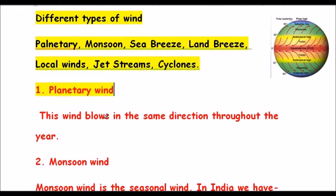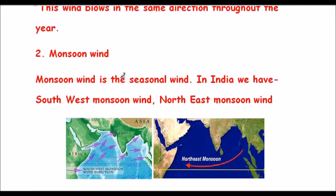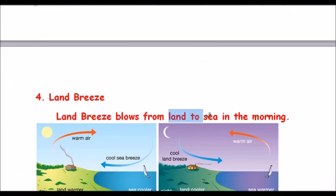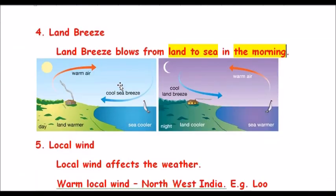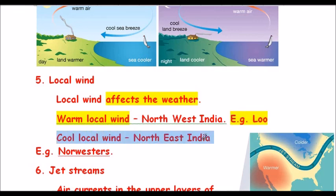Planetary winds blow in the same direction throughout the year. Monsoon wind is a seasonal wind — in India we have southwest monsoon and northeast monsoon wind. Sea breeze blows from sea to land in the evening. Land breeze blows from land to sea in the mornings. Local winds affect the weather — warm local winds in northwest India are called 'Loo', and cool local winds in northeast India are called norwesters.